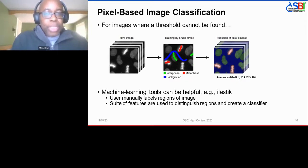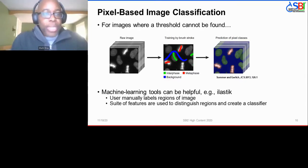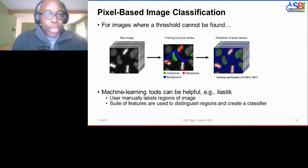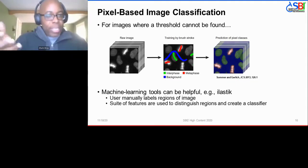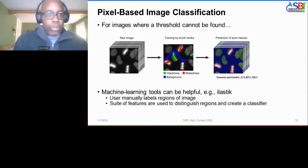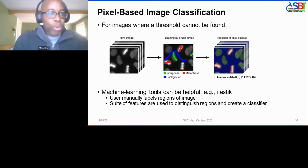There are cases where, due to the biology or assay, finding a single value that divides foreground from background may not be doable. In those cases, pixel-based classification is becoming increasingly popular. You feed in images, annotate by hand to create a training set — saying these pixels belong to the foreground, these to the background, and perhaps others to another class entirely — and then a machine learning algorithm on the back end figures out the distinguishing characteristics. The computer then comes up with the final answer.